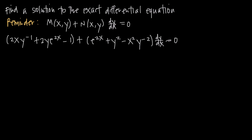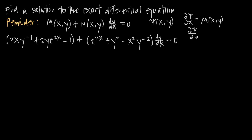In order for an equation to be an exact differential equation, it first has to be in this form: we have a multivariable function M in terms of both x and y, plus a function N in terms of x and y, multiplied by dy/dx, and that whole thing is equal to 0. Given an equation in this form, it may be an exact differential equation if it has a solution psi such that the partial derivative of psi with respect to x equals M(x,y), and the partial derivative of psi with respect to y equals N(x,y).